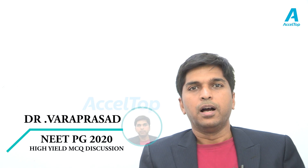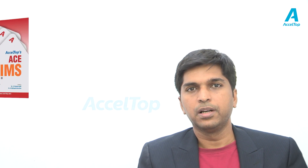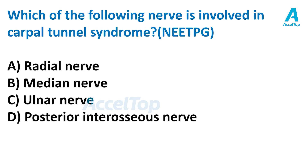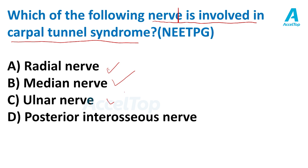Good evening, welcome again to another session of NEAT PG high yield MCQ discussion. Today we will see about carpal tunnel syndrome. The question is: which of the following nerves is involved in carpal tunnel syndrome? This is a straightforward NEAT PG pattern question. The given options are: radial nerve, median nerve, ulnar nerve, and posterior interosseous nerve.